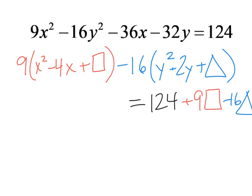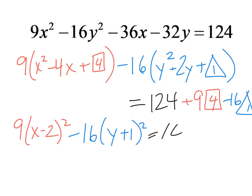So this one factors down, this is 9 times x minus 2 squared. 2 squared makes a 4 go into my box. And then this is minus 16 times y plus 1 squared. My triangle is a 1. And now I have 36 minus 16 is 20. So 124 plus 20 is equal to 144.